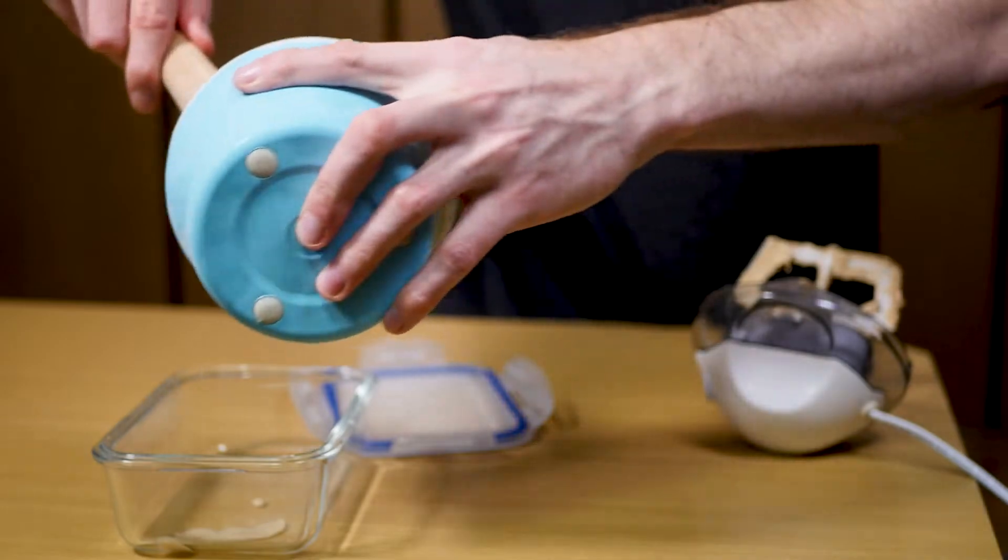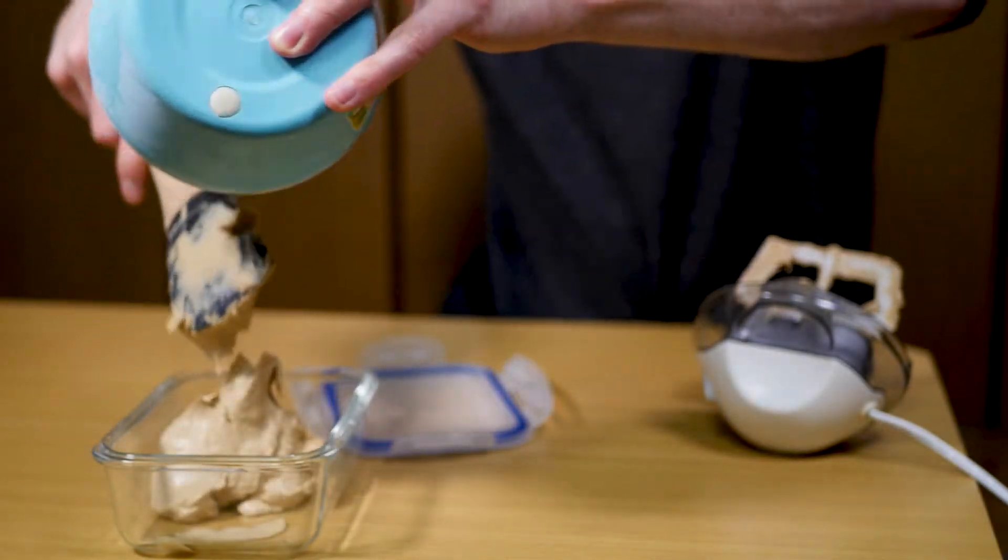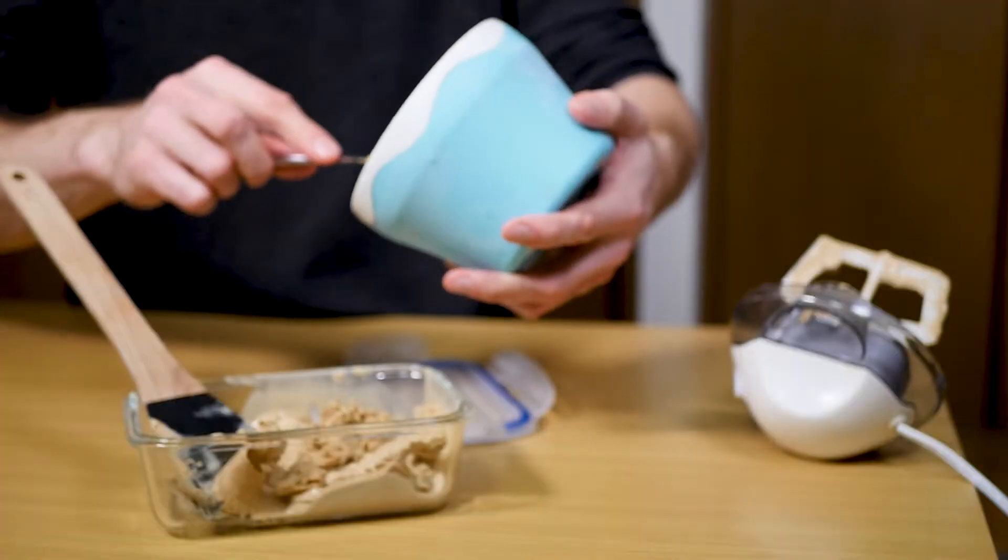Take it out and put it in a glass bowl or a metal bowl that has a cover and put it in the freezer for at least three or four hours to set.